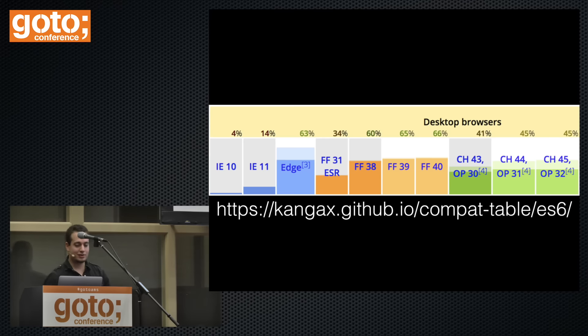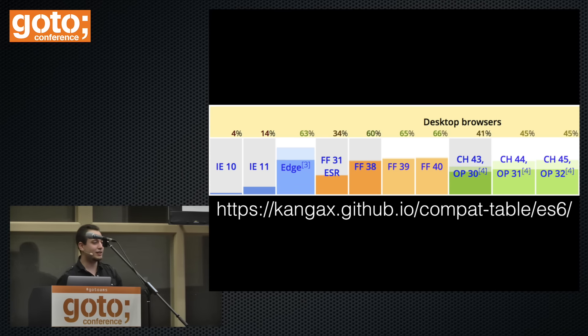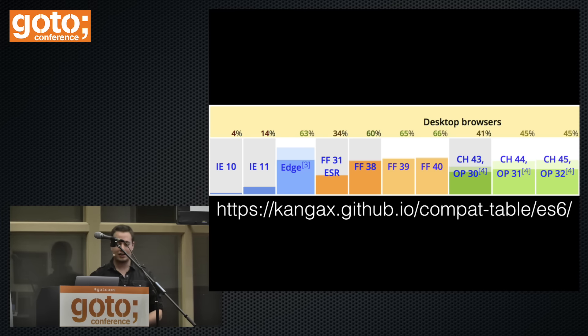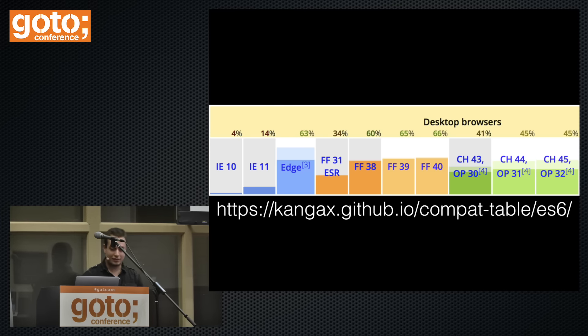If you think ECMAScript 6 is something in the future that's not here yet, well my friends, we are getting to that future. If you look at browser support, Firefox already has 66% of the ES6 features, Chrome has 45%, and the Edge version of IE coming in Windows 10 also has 63% behind some flags.